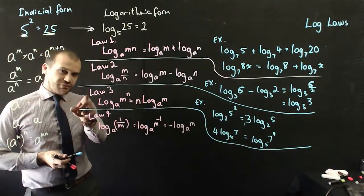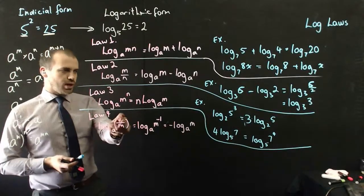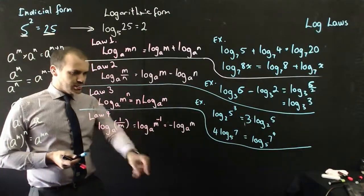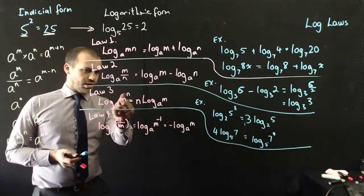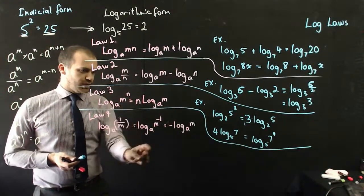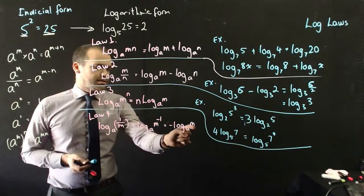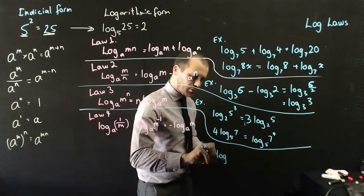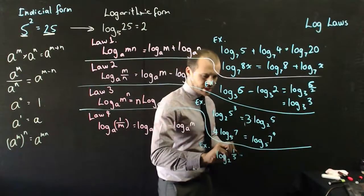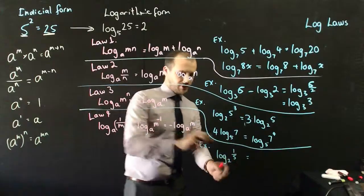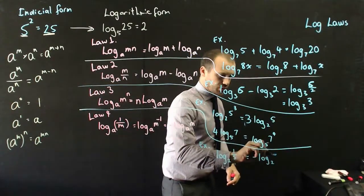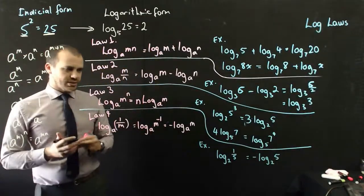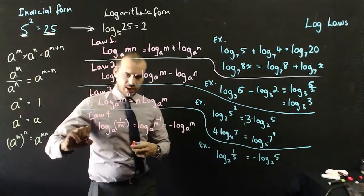Law 4 is a specific example of law 3. Log base a of (1 over m) equals log base a of m to the negative 1, just moving m to the top as a negative power. Applying our third log law, we bring the power out front: log base a of m to the negative 1 equals negative log base a of m. For example, log base 2 of (1/5) is the same as negative log base 2 of 5 — you get rid of the fraction and just get a negative out front.